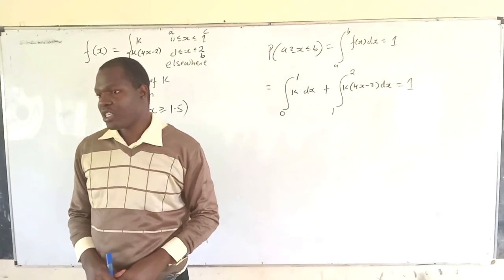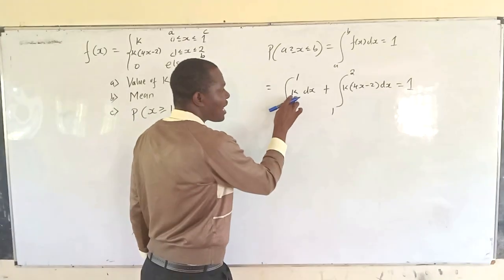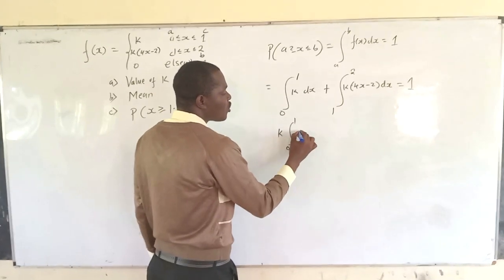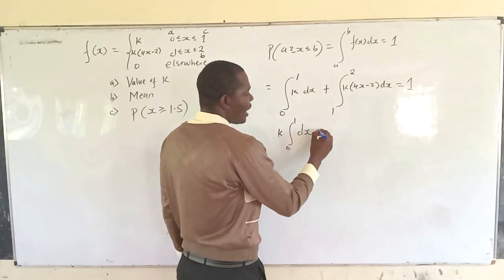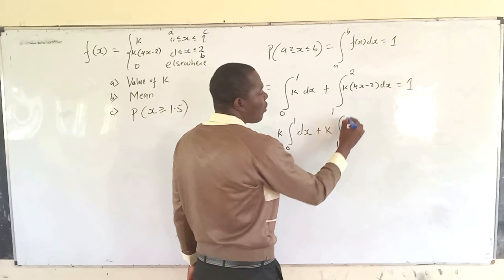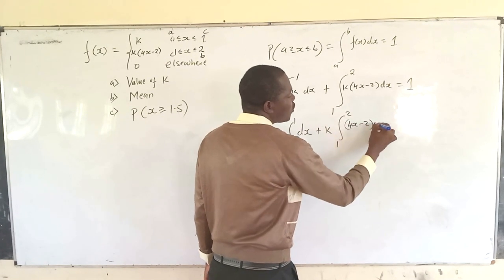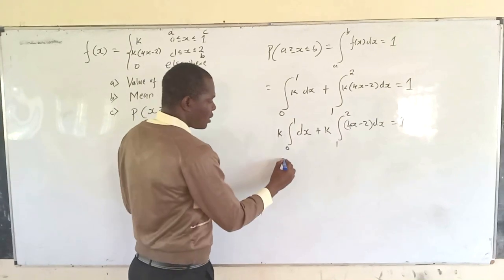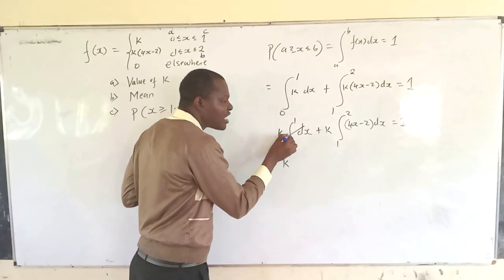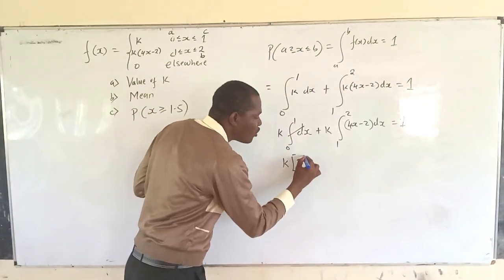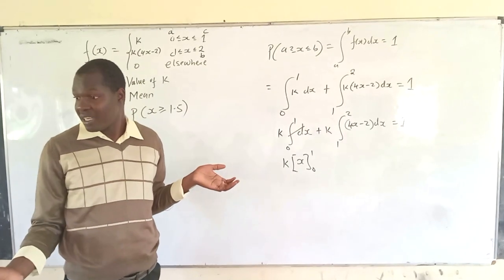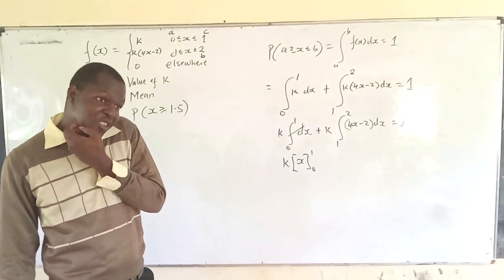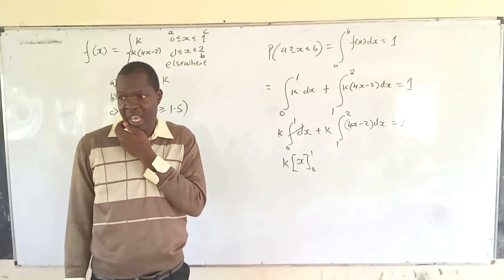Integrating over the full range from 0 to 2: k is a constant so it factors outside. We have k times the integral from 0 to 1 of dx, plus k times the integral from 1 to 2 of (4x minus 2) dx, and this is supposed to equal 1. When there is nothing in front of dx, you treat it as a total derivative — that gives you x. This is important because it also applies when dealing with differential equations.